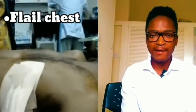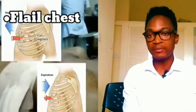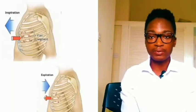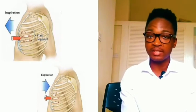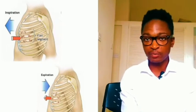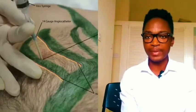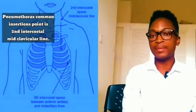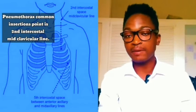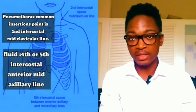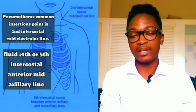There's a condition called flail chest, where a person has multiple rib fractures. Treatment is immediate. We need a needle decompression where we insert a large bore needle into the second intercostal space along the mid-axillary line. In case of fluid, we go for the fourth or fifth intercostal space, again in the mid-axillary line.